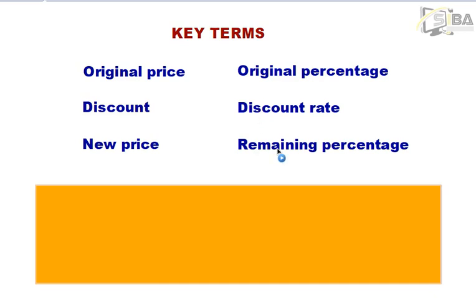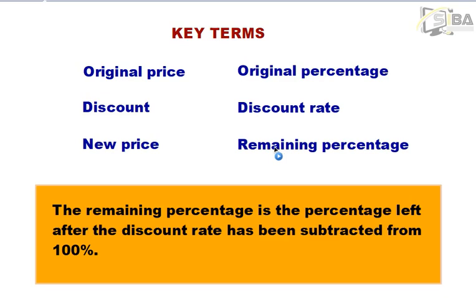Lastly, we have here the remaining percentage. As we have said earlier, the original percentage is always 100%. When the discount rate is taken from 100%, the percentage left is what we are going to describe as the remaining percentage. For example, if a discount of 20% is given on a product, then the remaining percentage will be 80% — that is 100 minus 20, giving us 80%.